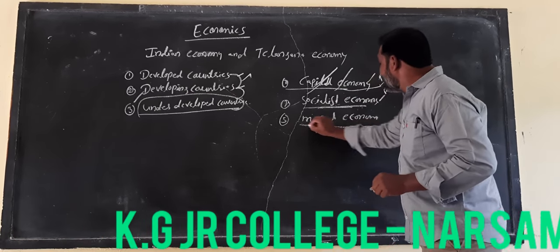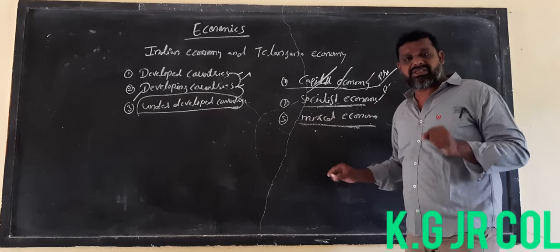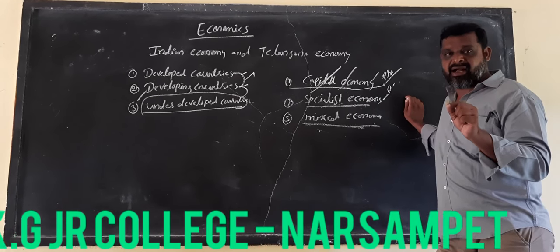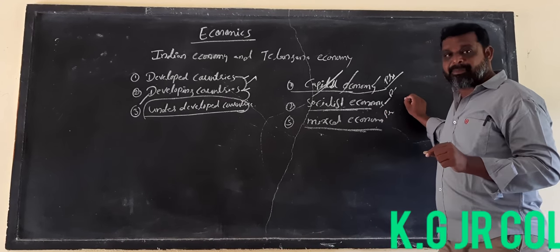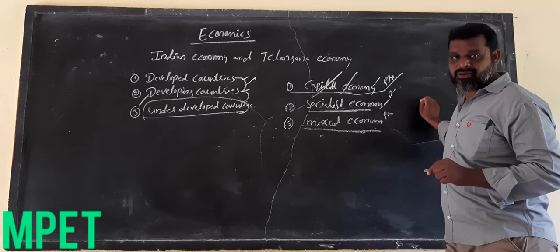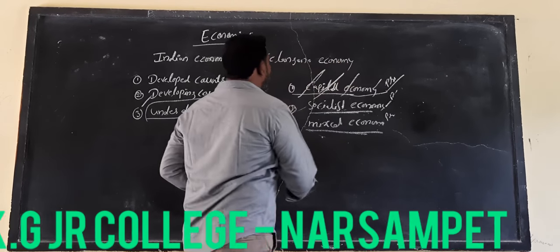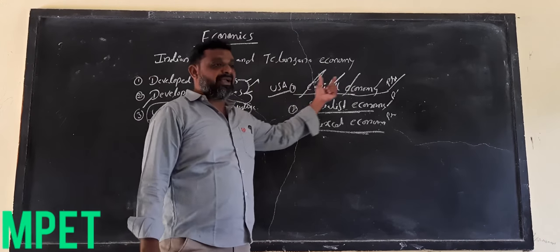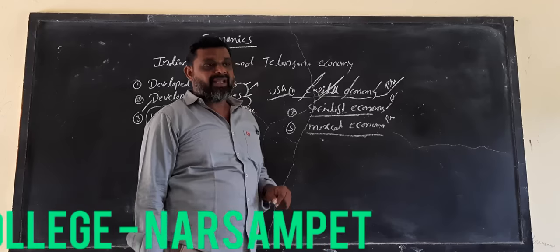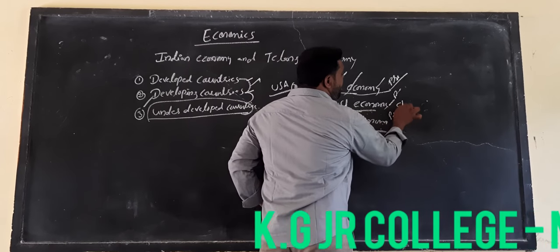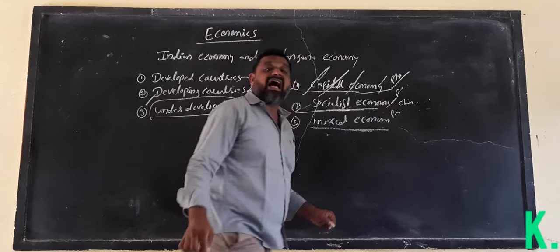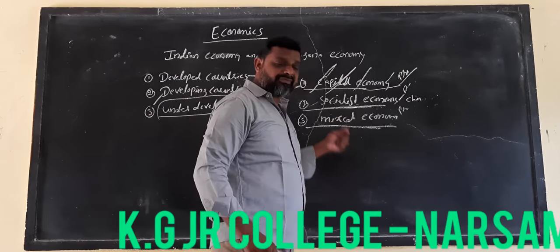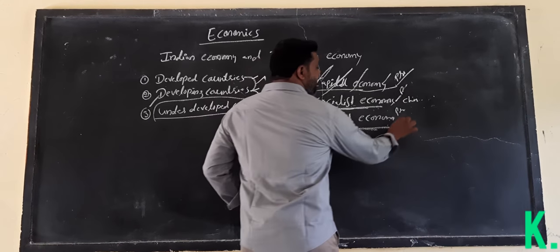Now Mixed Economy means the total — all factors, all sectors, and all markets — are under both private and public sectors combined. For example, the Capitalist Economy is used in USA, the United States of America. The Socialist Economy is used in China and North Korea. And the Mixed Economy is used in India.